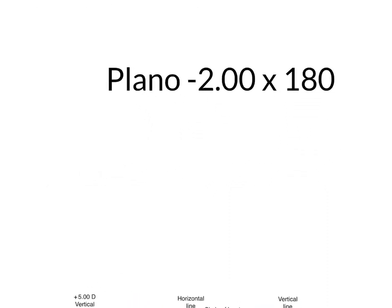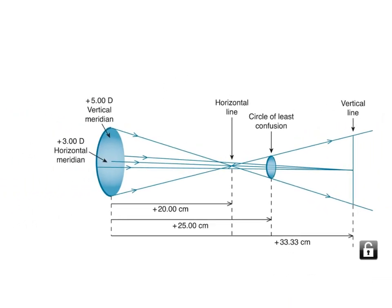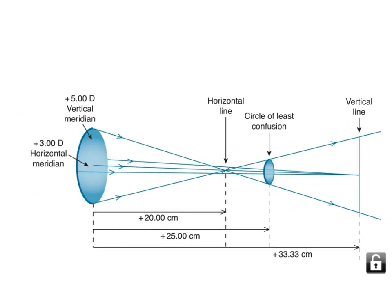Before we move on, I want to remind you what astigmatism is. In astigmatism, there is no focal point. Instead, there are focal lines. There is a vertical meridian here.